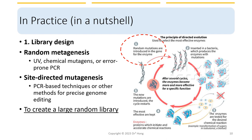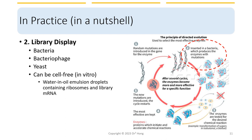The goal is to create a library containing a large number of variants with diverse sequences and properties. Although directed evolution does not involve using live animals, most of the time single-cell organisms are still used to produce the enzymes with mutations. Bacteria, bacteriophage, and yeast are commonly used to display the proteins generated from the random library. But this process can also be cell-free, such as using water-in-oil emulsion droplets containing ribosomes and library messenger RNA.